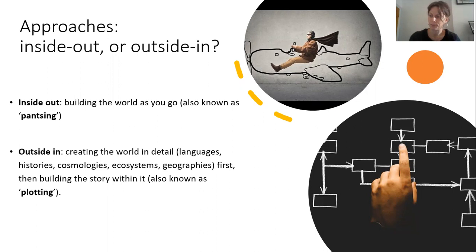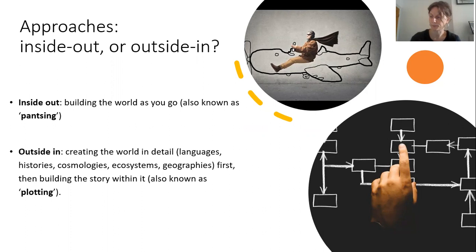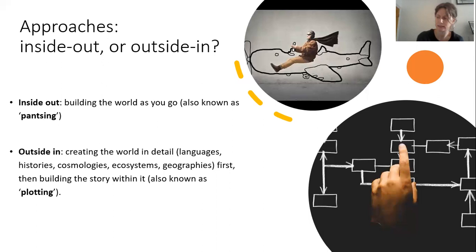Then there's the outside-in approach, where you create the world in detail first and then build the story within it. This is also known as plotting. The benefits of this are that you have a clear sense of the story world before you begin — a clear sense of where you're going, how your characters will fit, and what will and won't work. The drawbacks are that plotting takes time and a lot of work. You'll need to do your research, you might need to create maps, and perhaps create a story bible. And changes can be difficult to implement because everything's more or less set in stone before you begin.